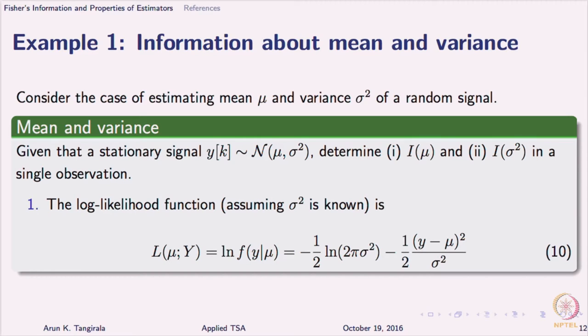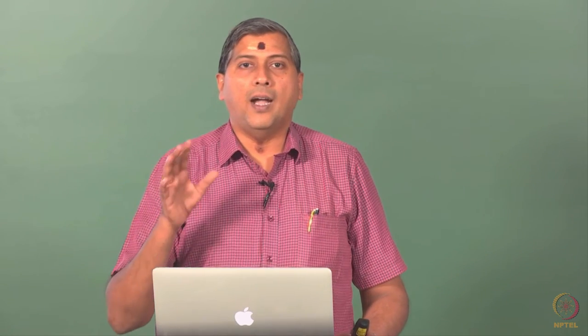We have a stationary signal — more or less the same example we have looked at before in optimization — and here we are interested in estimating the mean. We assume that sigma squared is known. The first question we are going to ask is: if I pick an observation at random, how much information does a single observation have with respect to mu, assuming sigma squared is known?